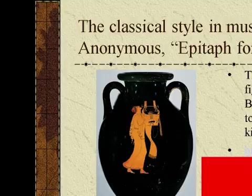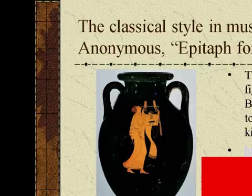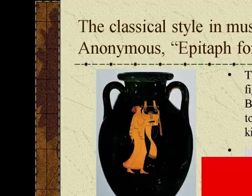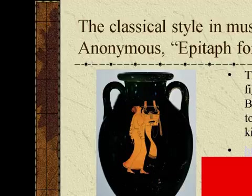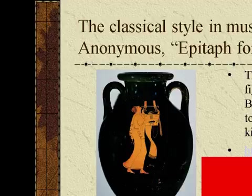The Classical Style in Music. The Epitaph for Seikilos, depicted on the Berlin Painter's red-figured amphora from 490 BCE, shows a young man singing to the accompaniment of a kithara — a kind of lyre. Ancient Greek Dorian Mode corresponds on the piano to only white notes: the diatonic scale.